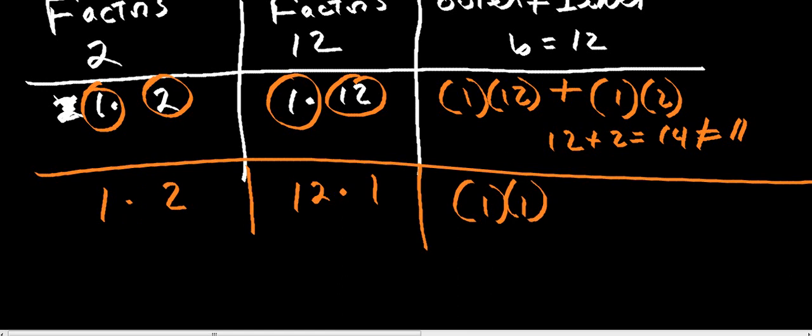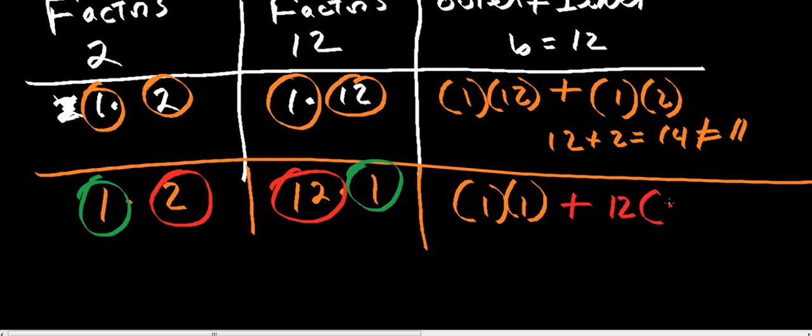Those are my outers. My inners are 2 and 12. So we're going to add that to 12 times 2 or 2 times 12. So you got 1 plus 24, so you get 25. So that's not it.